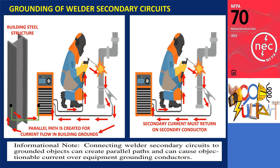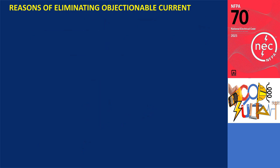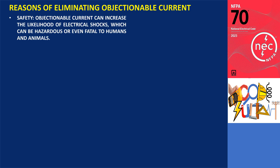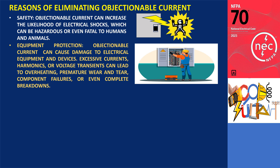So, why is it crucial to eliminate objectionable current? Eliminating objectionable currents in electrical systems is crucial for several reasons. Safety: objectionable currents can pose significant safety risks. They can increase the likelihood of electrical shocks, which can be hazardous or even fatal to humans and animals. Equipment protection: objectionable currents can cause damage to electrical equipment and devices. Excessive currents, harmonics, or voltage transients can lead to overheating, premature wear and tear, component failures, or even complete breakdowns.